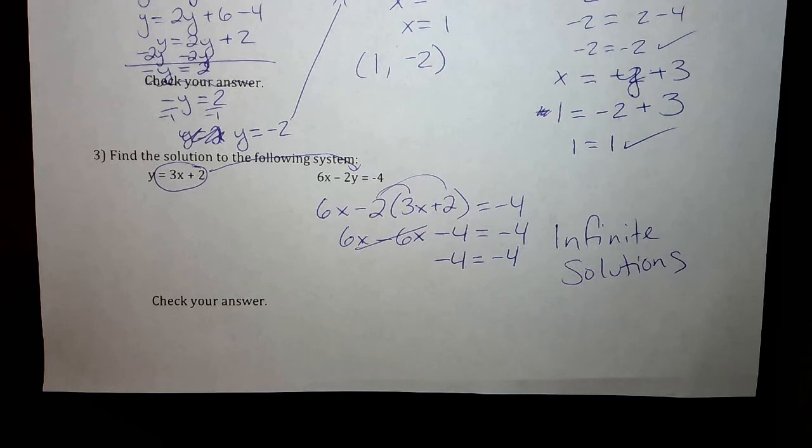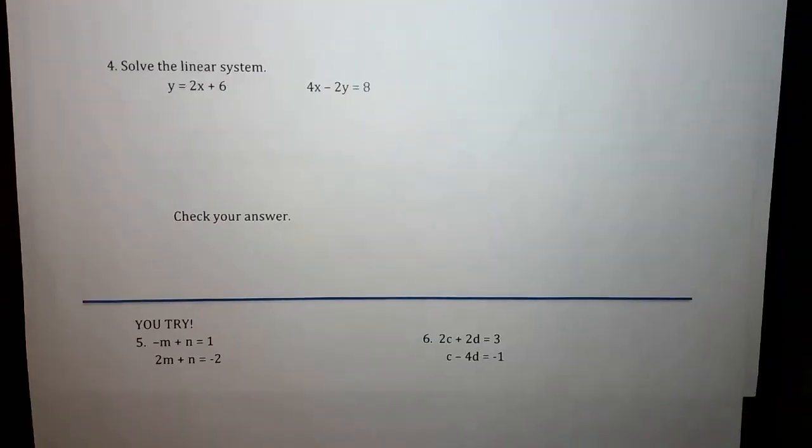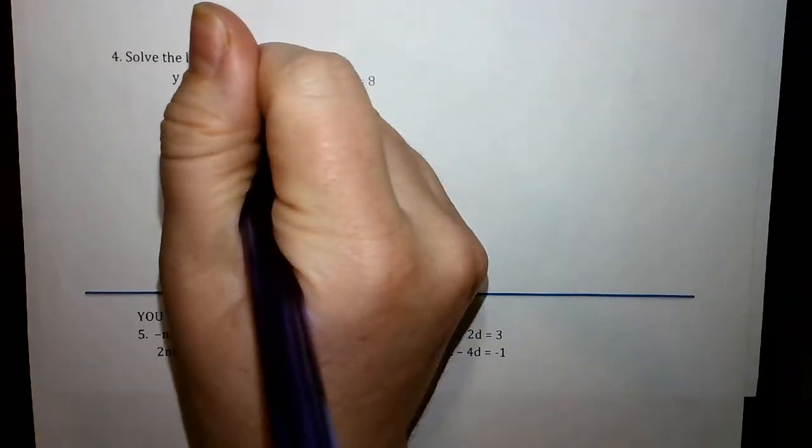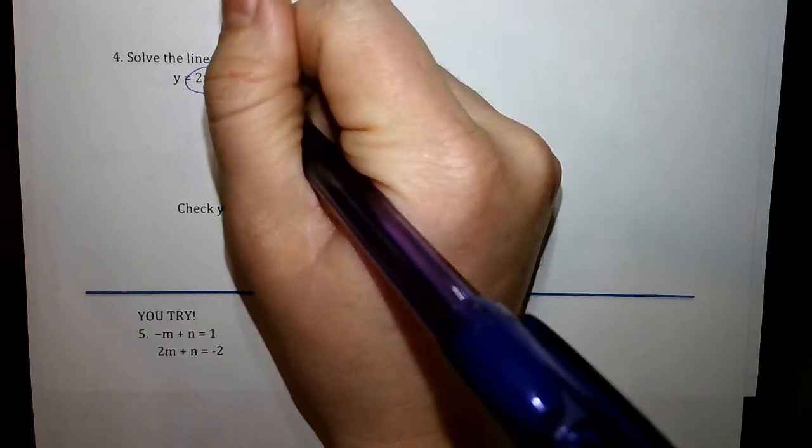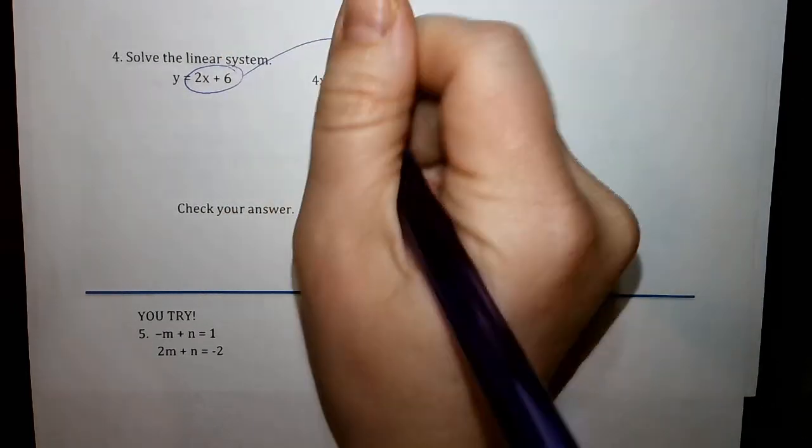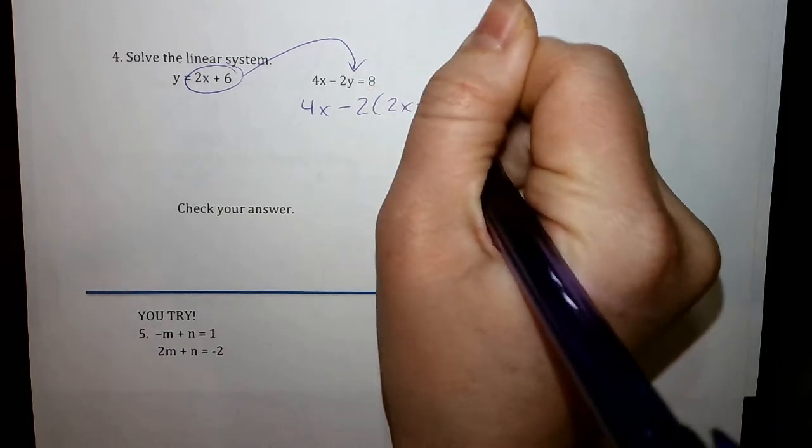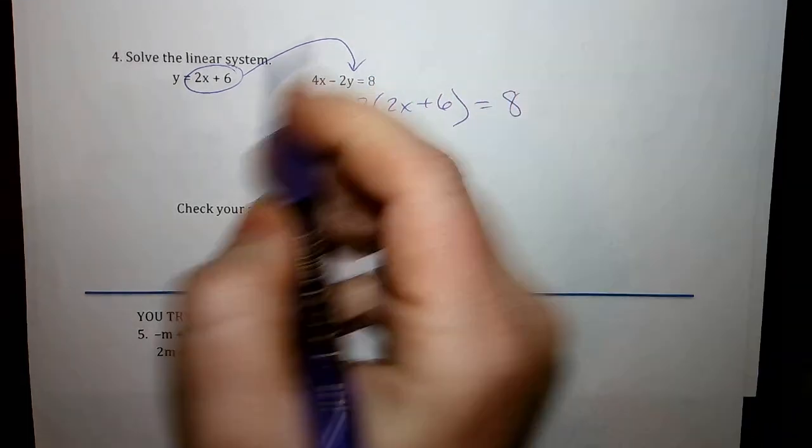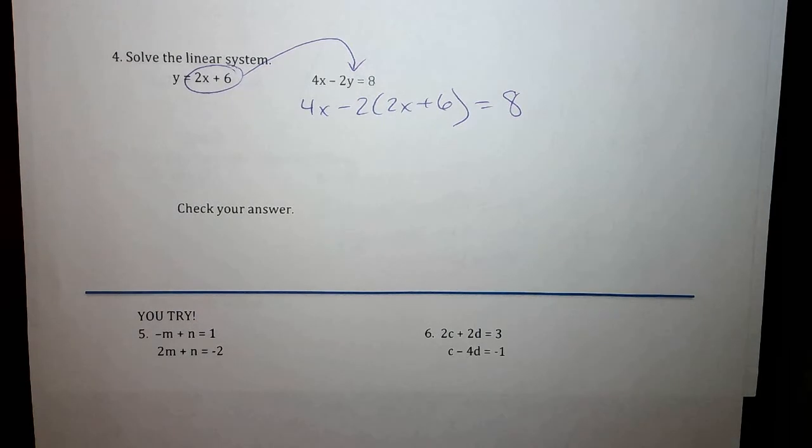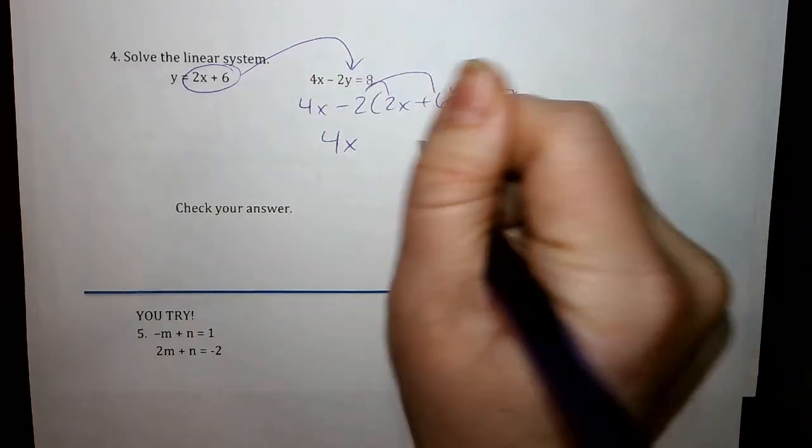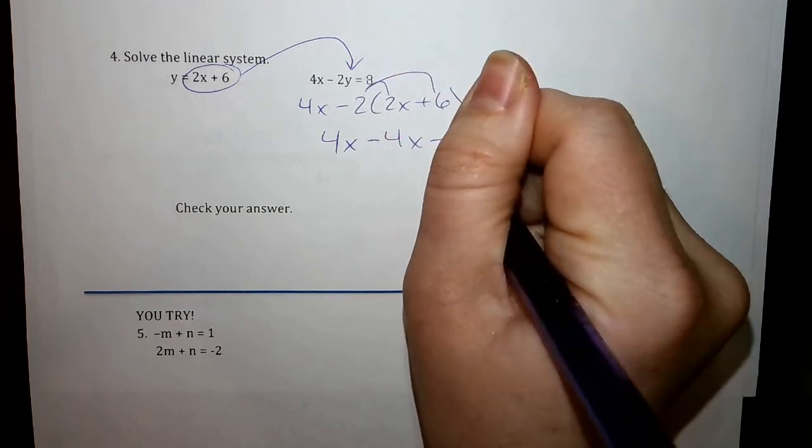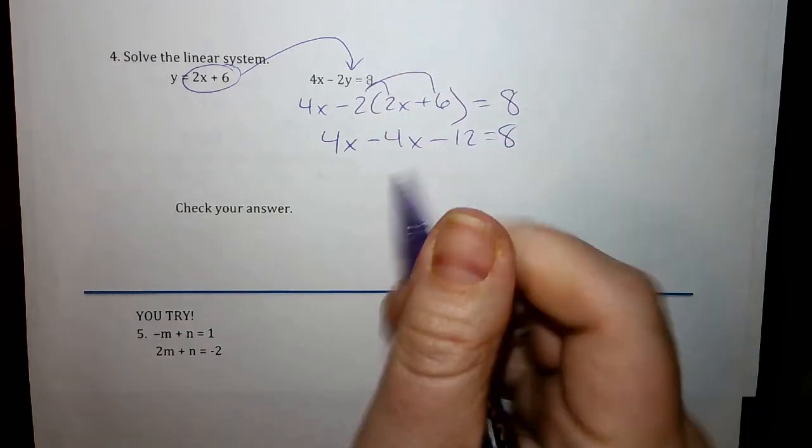So our last scenario, number 4, again I have 1 equal to y so I don't have to turn that around. I'm just going to plug this in. I get 4x minus 2 times 2x plus 6. So I took that because that's equal to y, I can replace y with that. I distribute in 4x minus 4x minus 12 equals 8. Again those cancel out.